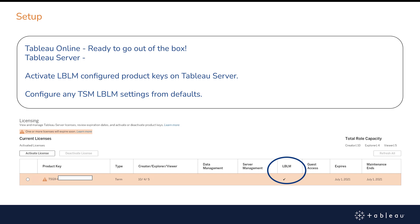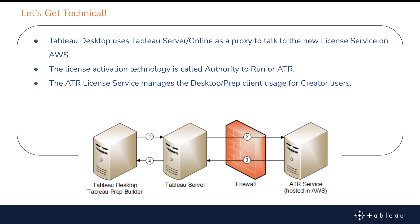LBLM will not work unless you have a product key activated for Tableau Server that has that flag set. Tableau Desktop and Tableau Prep use Tableau Server or Tableau Online to talk to the licensed service on AWS — that is our ATR service, or the authority to run. Tableau Server must be able to communicate through your network to talk to that licensed service. You can Google 'Tableau Internet Requirements' to see the list of URLs your network team may need. Both port 80 and 443 are needed due to AWS certificate checks.